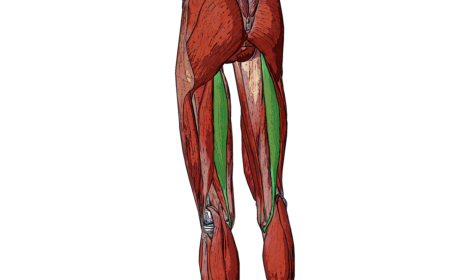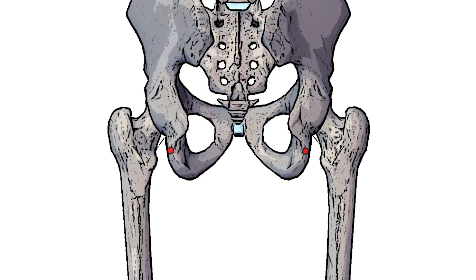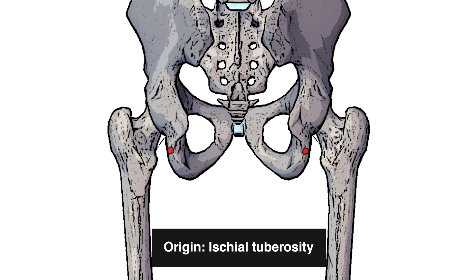Next, let's move on to the origin and the insertion of the semitendinosus. You can see I've marked out the origin of the semitendinosus here on the hip bone in red. This section of the hip is called the ischium. The semitendinosus originates on the ischium — more specifically on a slightly raised bump called the ischial tuberosity. So the semitendinosus muscle originates from the ischial tuberosity.